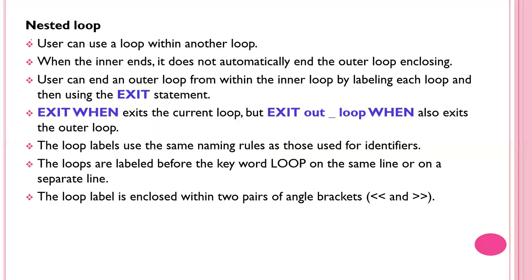The next type of loop is the nested loop. A user can use a loop within another loop — this is called a nested loop. When the inner loop ends, it does not automatically end the outer loop. A user can end the outer loop from within the inner loop by labeling each loop and then using the exit statement with the label name.